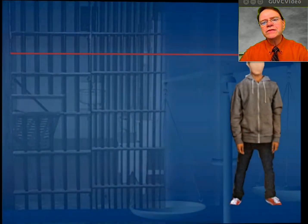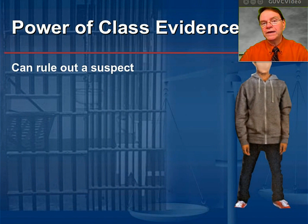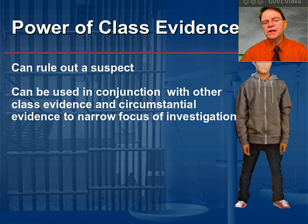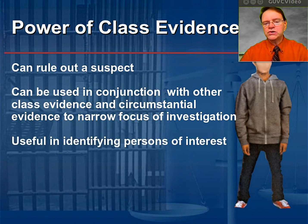Here is the real power of class evidence. We can rule out a suspect — if they don't match the description, they're off the list. It can also be used in conjunction with other class evidence and circumstantial evidence to narrow the focus of the investigation, and it's useful in identifying persons of interest.